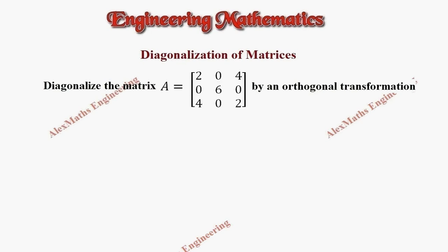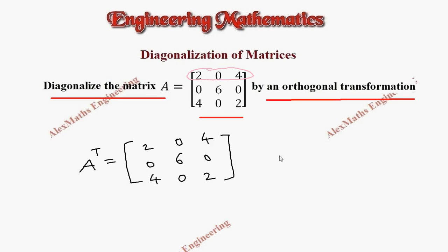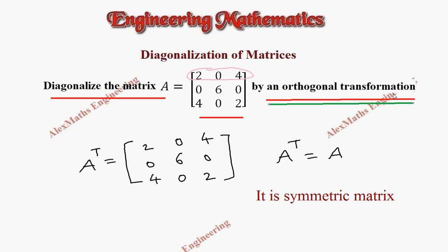Hi students, this is Alex. In this video we are going to diagonalize the given matrix A by an orthogonal transformation. First we have to check whether the given matrix is symmetric. For that, we find A transpose by changing the rows into columns. The first row is written as the first column, giving us 2, 0, 4; second row as second column; third row as third column. Since A transpose equals A, it is a symmetric matrix, and orthogonal transformation is possible only for symmetric matrices.